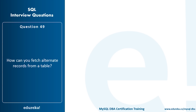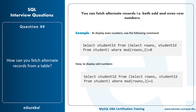How can you fetch alternate records from a table? You can fetch both odd and even row numbers. To display even row numbers: SELECT student_id FROM (SELECT ROW_NUMBER() OVER() AS row_num, student_id FROM student) WHERE MOD(row_num, 2) = 0. For odd row numbers, use MOD(row_num, 2) = 1. When dividing the row number by 2, a remainder of 0 indicates an even row and a remainder of 1 indicates an odd row.